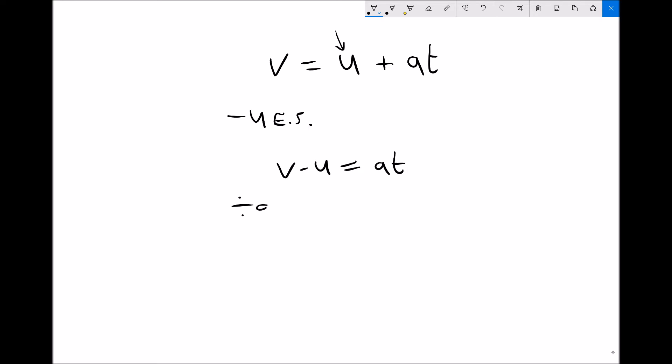So we're going to divide by a each side, and what we'll be left with is v minus u all divided by a. So typically you would put that in brackets.